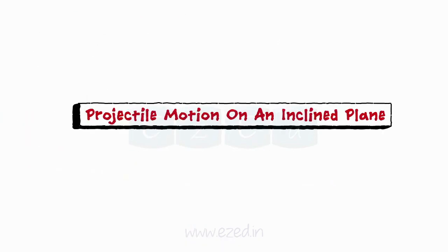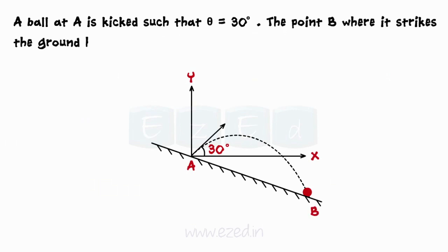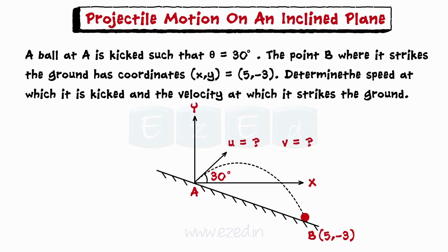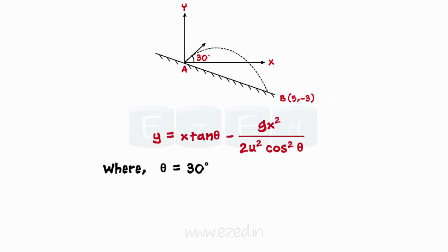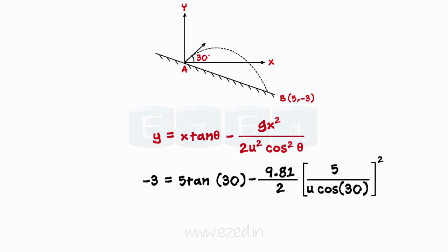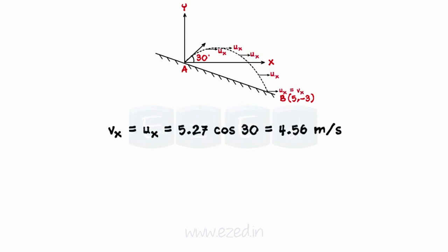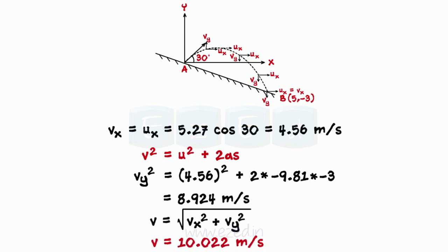Let us now analyze projectile motion on an inclined plane. A ball at point A is kicked such that theta equals 30 degrees. The point B where it strikes the ground has coordinates 5 and minus 3. Determine the speed at which it is kicked and the velocity at which it strikes the ground. Using the equation of the path of a projectile with theta equals 30 degrees, g equals 9.81 meters per second square, x equals 5 meters and y equals minus 3 meters, and substituting the values, we get the initial speed at which the ball is kicked. The horizontal component of velocity remains constant — that is, Vx equals Ux. For the vertical component, using v squared equals u squared plus 2as and substituting the values, we get the velocity with which it strikes the ground.